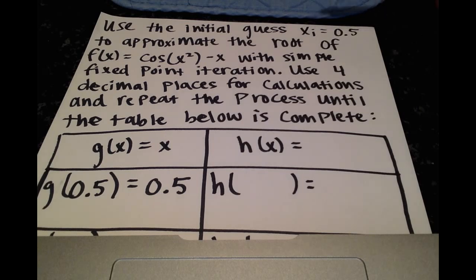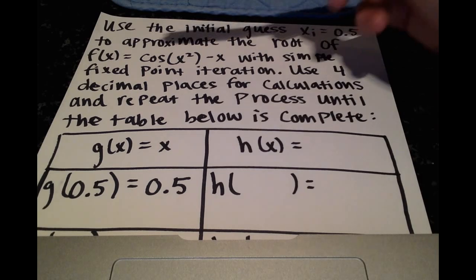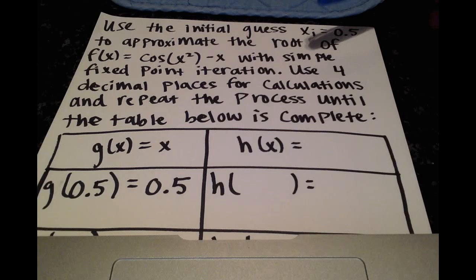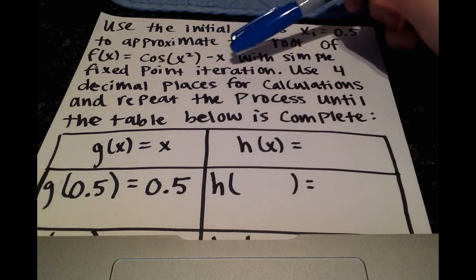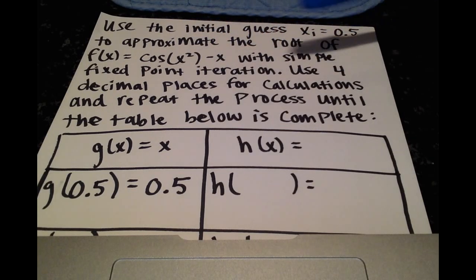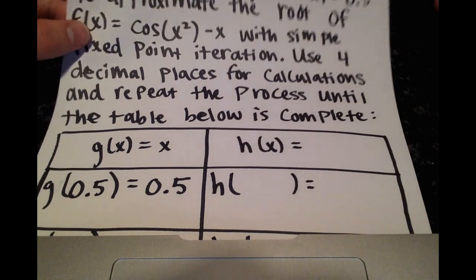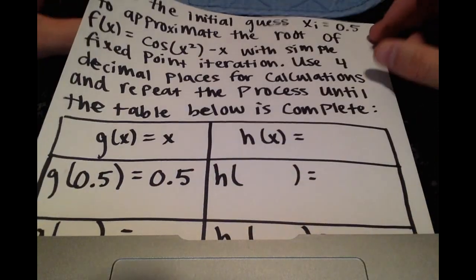So we're told to use the initial guess of xi equals 0.5 to approximate the root of f of x equals cosine of x squared minus x. And we're going to be using the simple fixed point iteration. And they want us to use four decimal places for calculation. And we're also going to be completing a table.